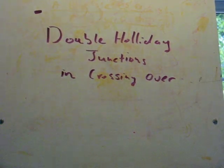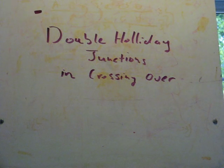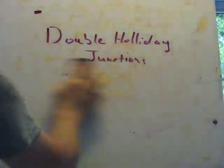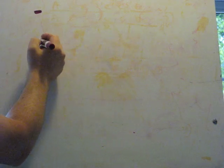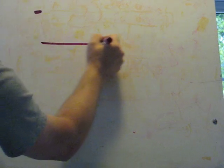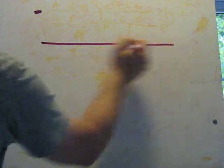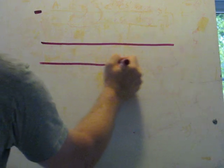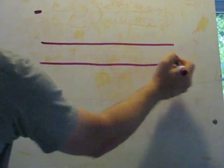Today we're going to talk about double Holliday junctions in crossing over. During crossing over in meiosis, essentially what happens is this form of DNA repair. Specifically, let's draw the two duplexes of DNA that engage in crossing over.